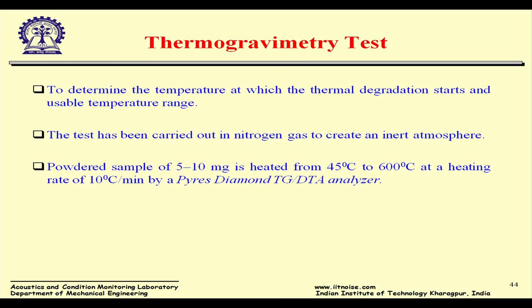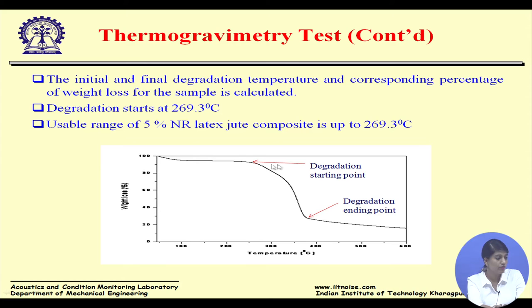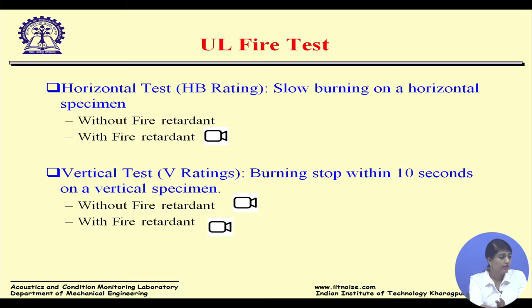The thermogravimetric test determines the usable temperature range of the material — how much temperature it can sustain. This shows the degradation start and end points. We found that our sample starts degrading at 269.3 degrees Celsius, which is quite high.